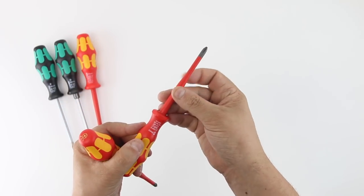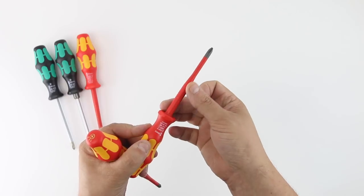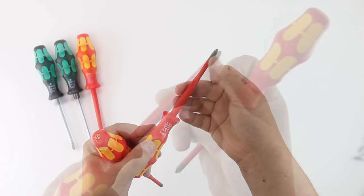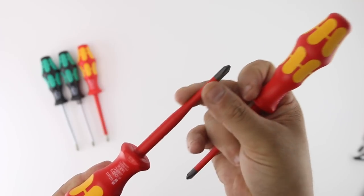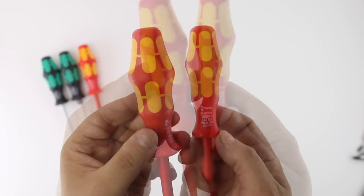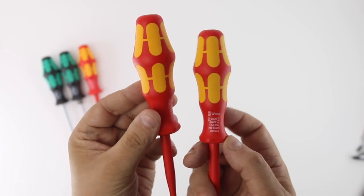Sometimes you may need to get into hard-to-reach places, so there are also slimline versions. These have a reduced blade diameter and have a seamless joint between the insulation and tip. These also come in a reduced handle size as well.